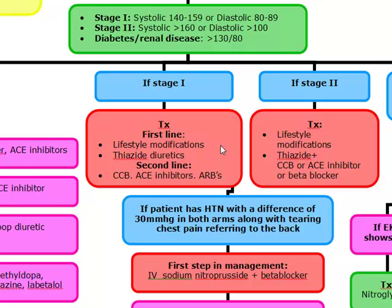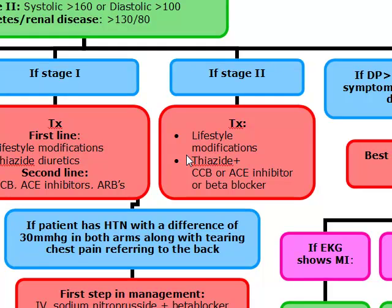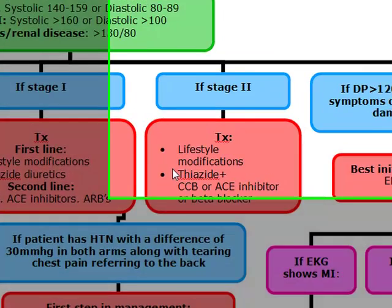For stage two hypertension, we're going to do lifestyle modifications and drugs together. We're going to use a thiazide diuretic and another drug — that other drug is either going to be a calcium channel blocker, an ACE inhibitor, or a beta blocker.